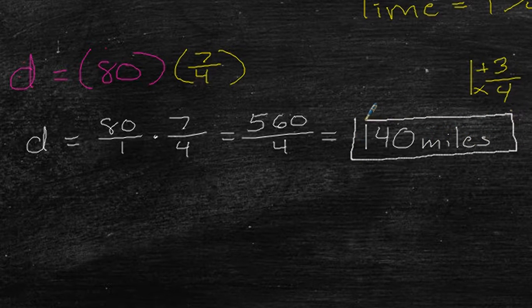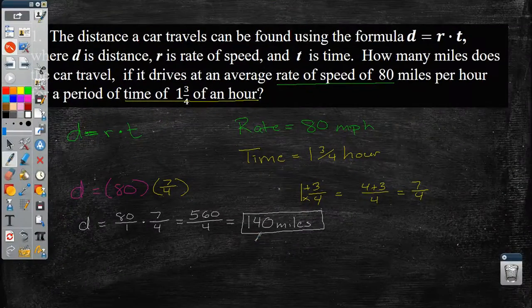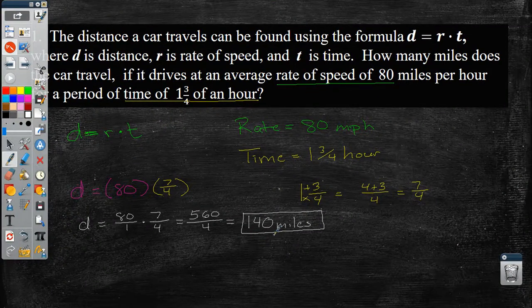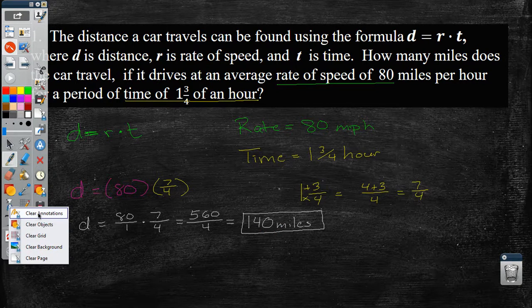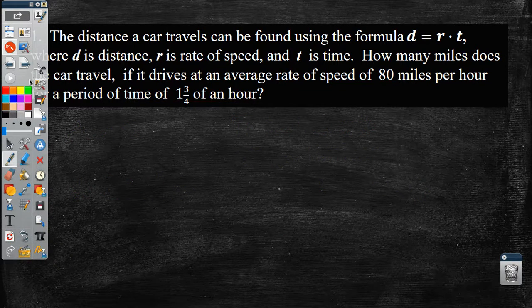If a car is doing 80 miles per hour and drives for 1 and 3 quarters hour, it should cover 140 miles. Let's clear this out. Let's move to the next one.